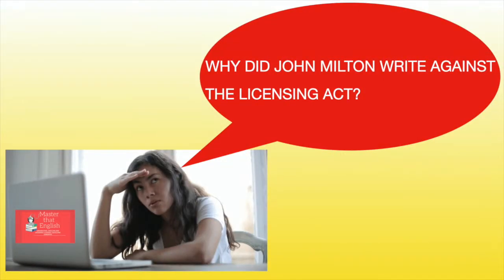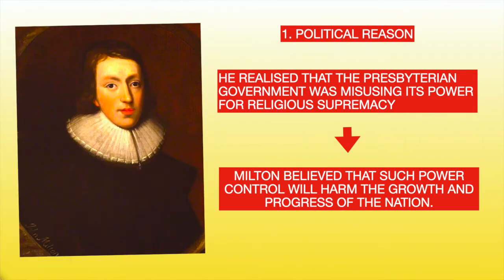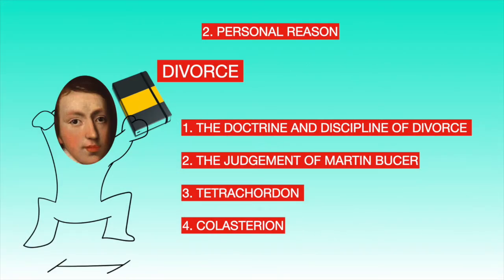Why did Milton write against the Licensing Act? There are two reasons: one political and one personal. The political reason was that Milton realised that the Presbyterian government was misusing its power for religious supremacy, and he believed that such power control would harm the growth and progress of the nation. The personal reason was that his divorce tracts were banned.